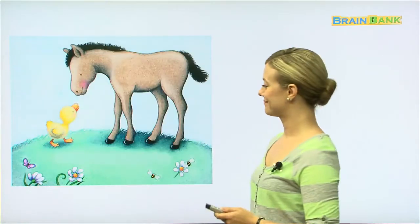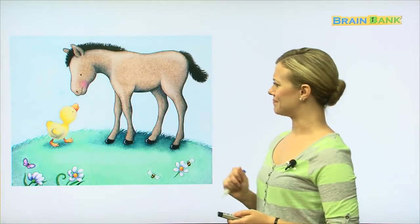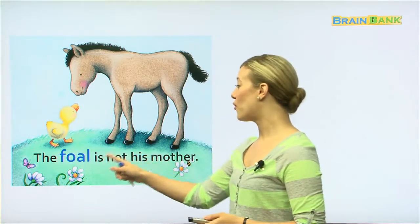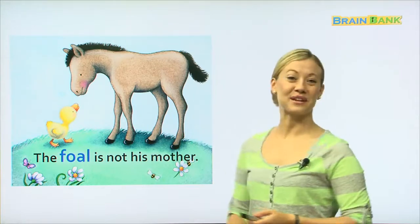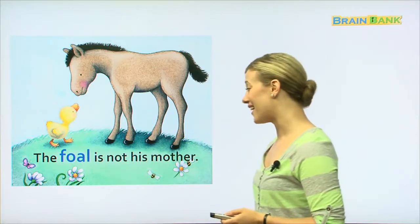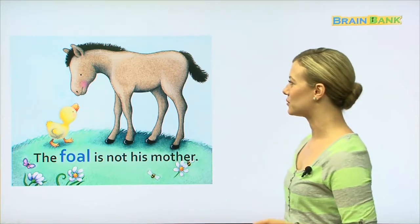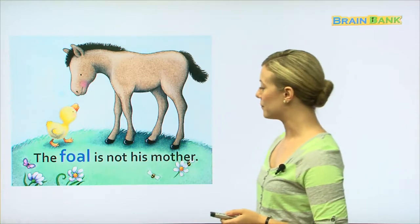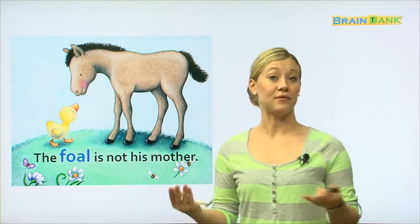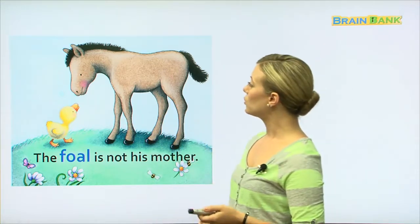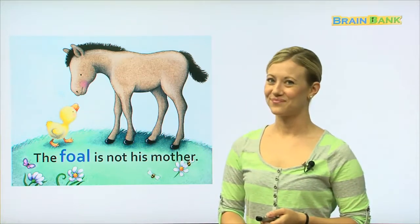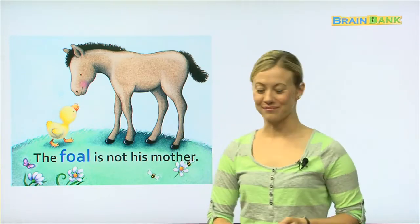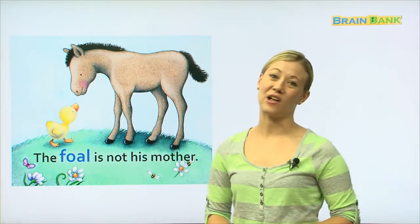Let's keep looking. That doesn't look like a duck either. The foal is not his mother. Let's read it all together. The foal is not his mother. Oh man, we still didn't find the baby duckling's mother. Now, a foal is another type of baby animal. Who do you think the foal's mother is? That's right, a horse is the foal's mother.